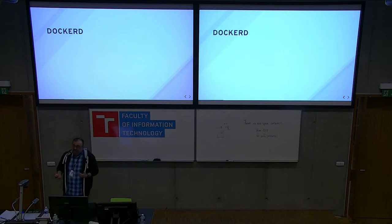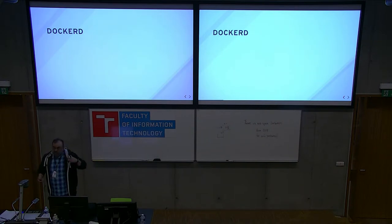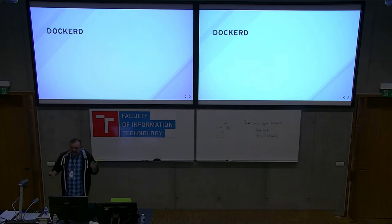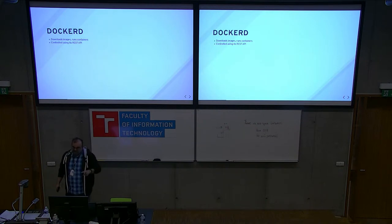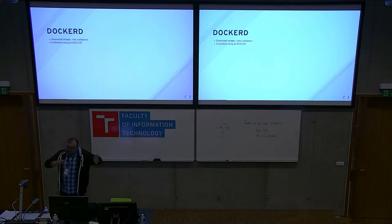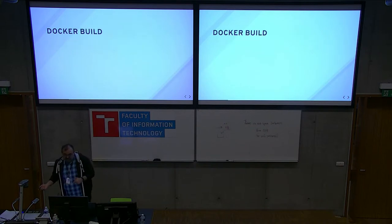Docker D has traditionally been the runtime that Kubernetes used to actually do the heavy lifting of running a given image as a container any time it needed to do something. If you were running a workload under Kubernetes, it was being run by Docker D. It downloads images, it runs containers. It's controlled using a REST API, which is different than an RPC API, but the end goal is the same — you're over here, you tell it to do a thing, it does the thing. The REST API includes a build endpoint, which is how it used to do builds.